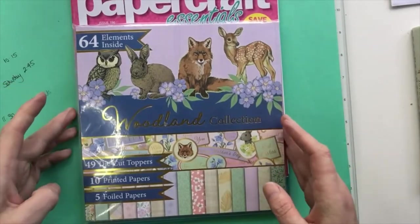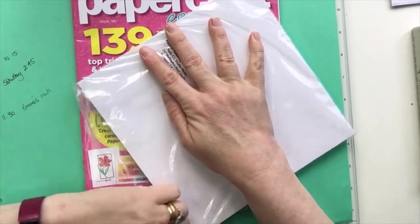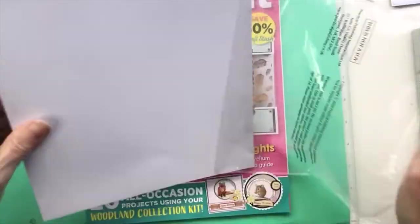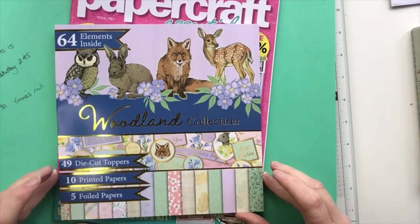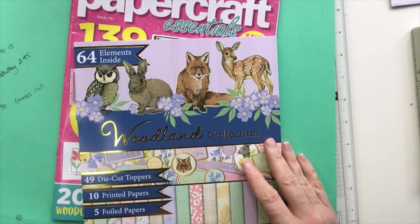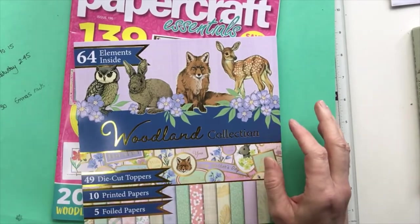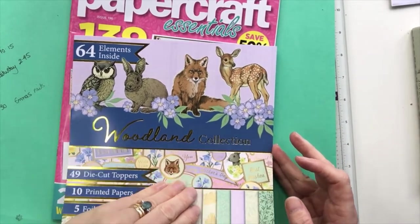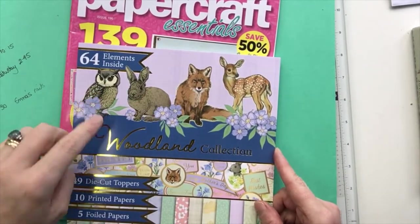Let's have a look and see what's in here. So I think this is eight by eight. We've got 49 die cut toppers, 10 printed papers and five foiled papers. Is it eight by eight? Let's have a look. It is indeed eight by eight. That is lovely. Just look at the little bunny and the fox, oh and the owl and the deer.